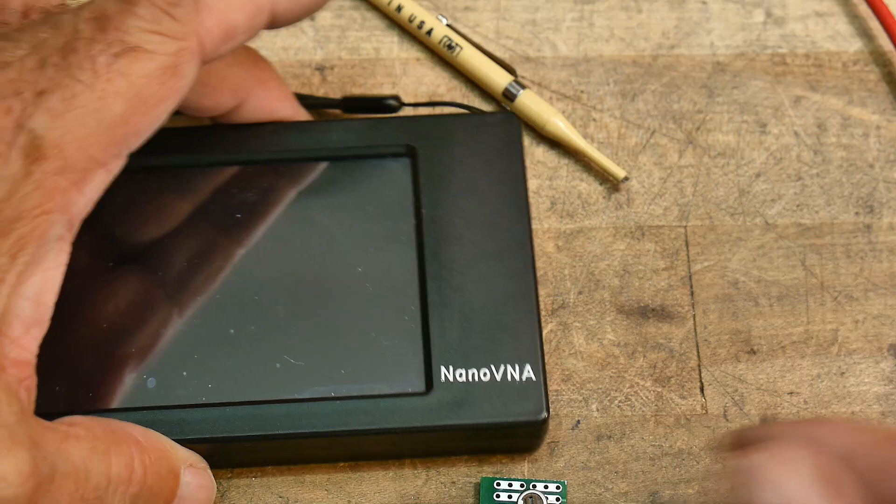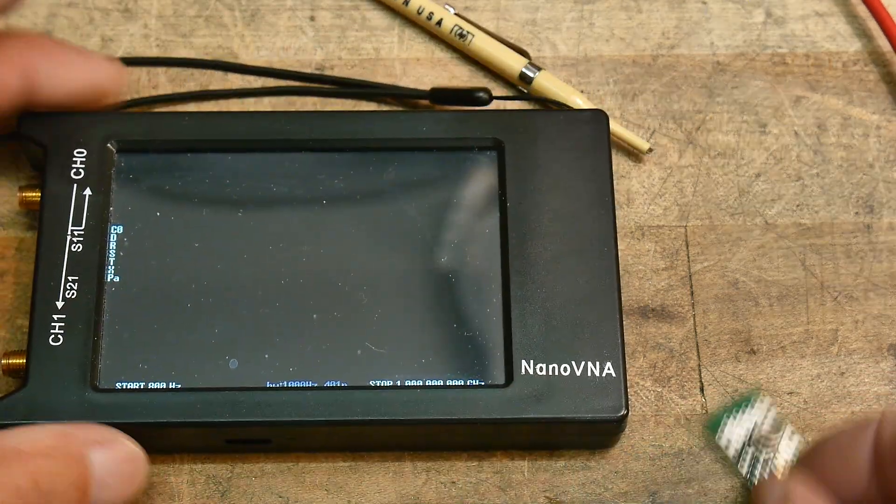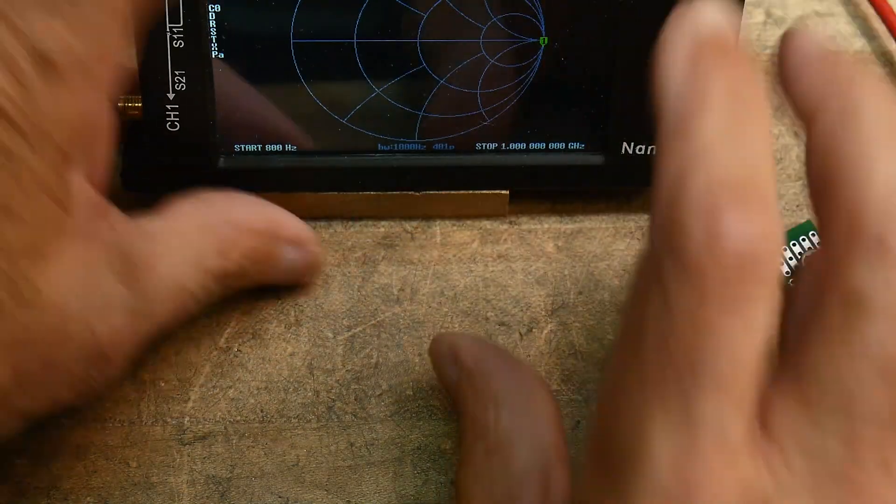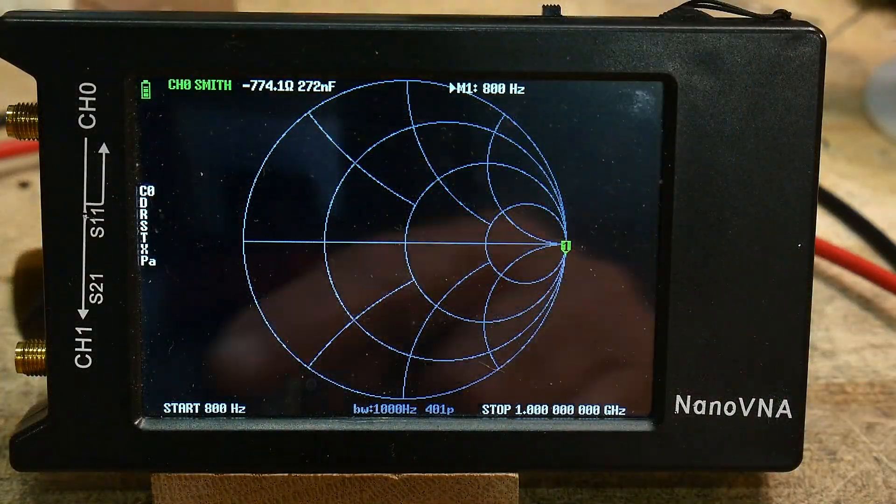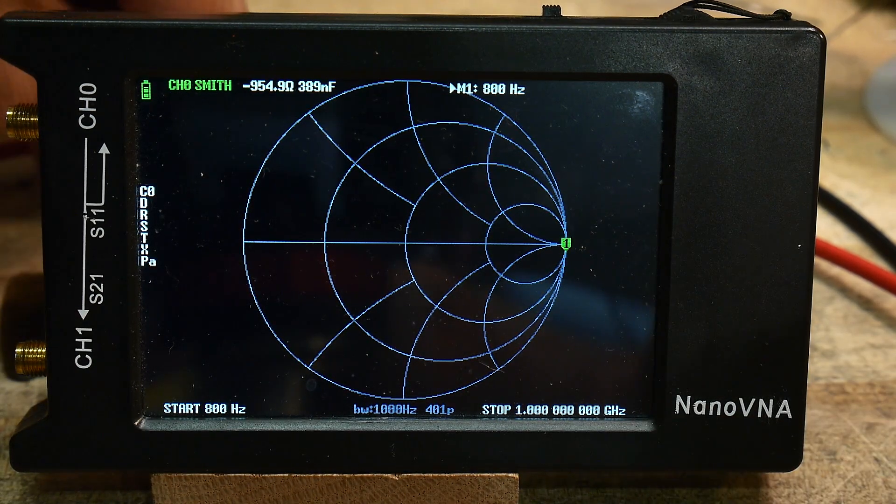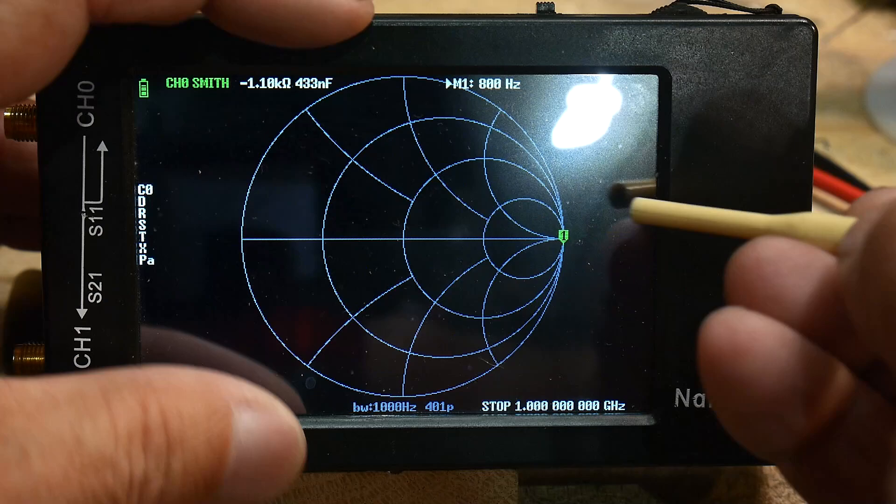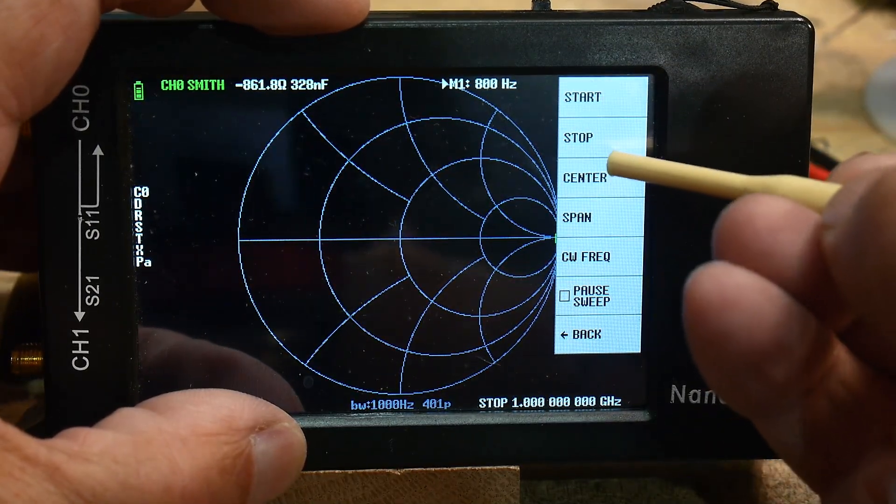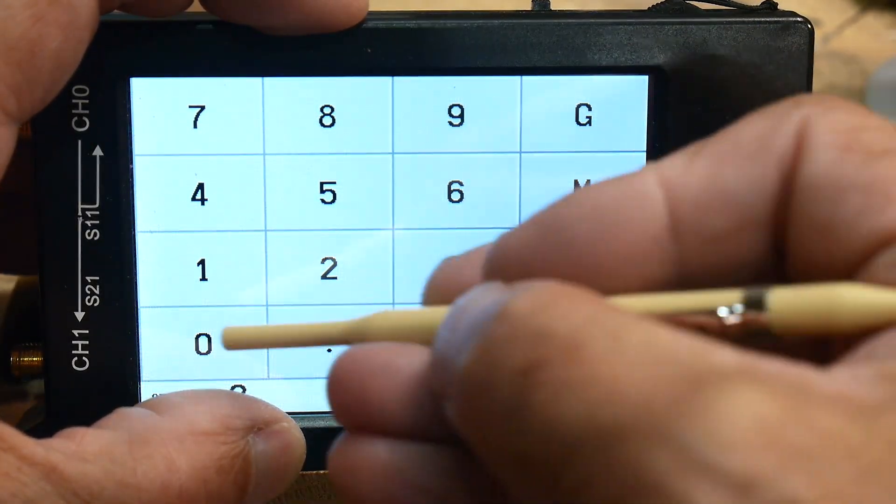All right, so let's go ahead and get the camera set up so there's no glare and everything, just a second. All right, I think that's pretty good, here's a Smith chart. I am going to limit the frequency range from 0 to 30 megahertz, okay.